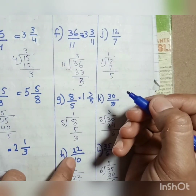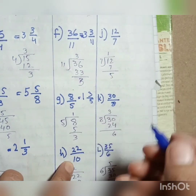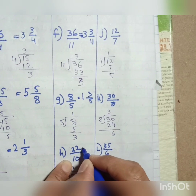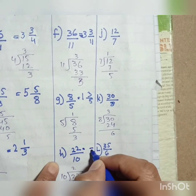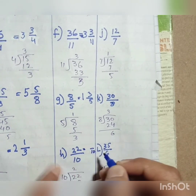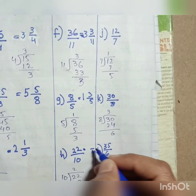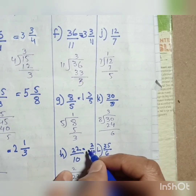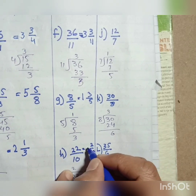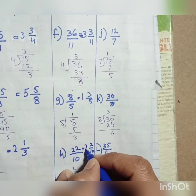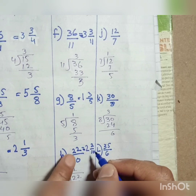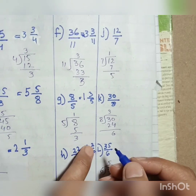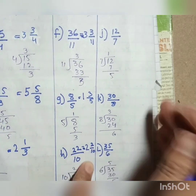Next: 22 by 10. Dividing gives quotient 2 and remainder 2. The denominator stays 10. So 22 by 10 is equal to 2 whole 2 by 10.